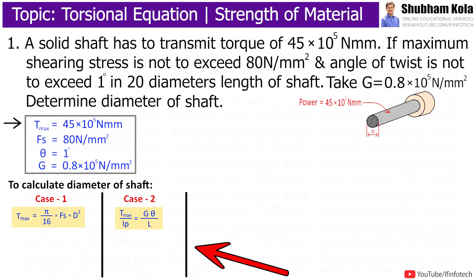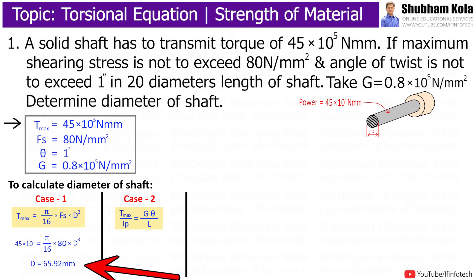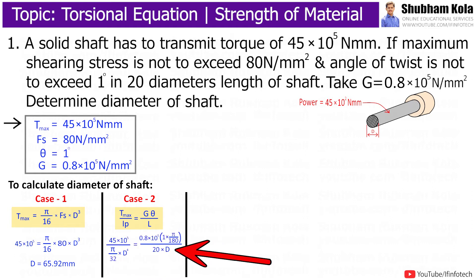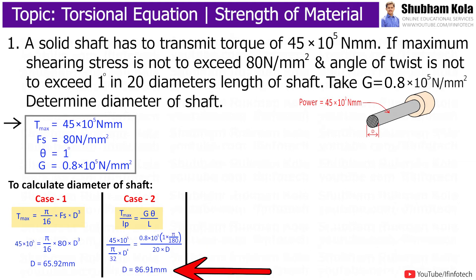To calculate the diameter, I will use two formulae. From the first case, the value of diameter we got is 65.92 mm. In the second case, I will put the value L = 20D, and from the second case, the value of D will be 86.91 mm.